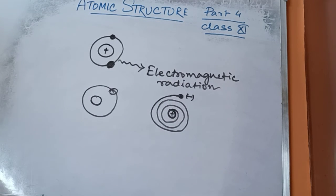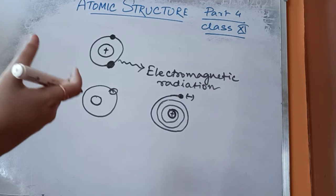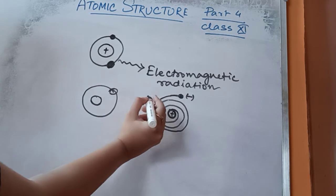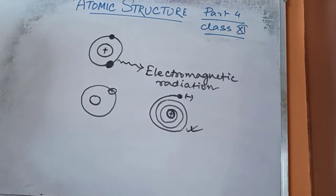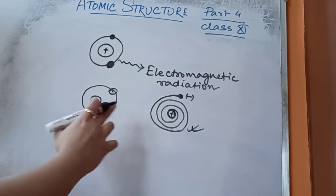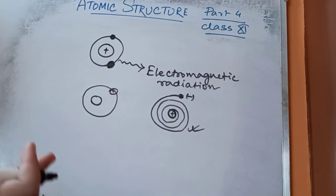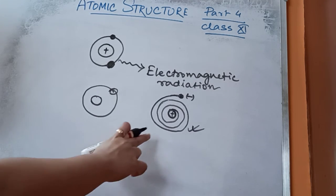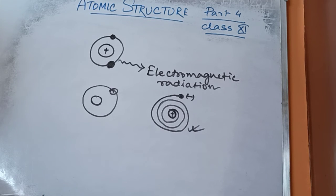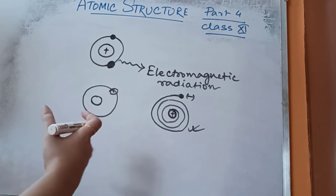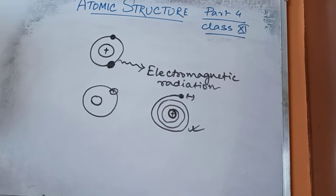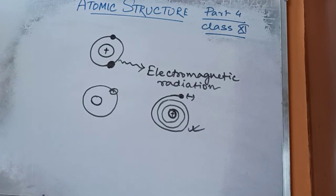But that is not the fact. According to his model, the electron should spiral into the nucleus. However, we know that atoms are completely stable — this does not actually occur. But if we follow Rutherford's atomic model, this phenomenon should happen. So his model could not explain the stability of the atom.